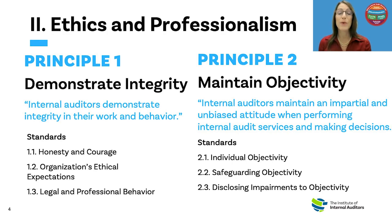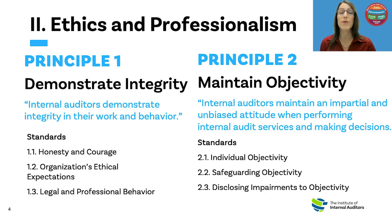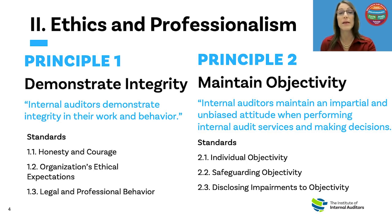Standard 2.1, individual objectivity, contains all the requirements about individual objectivity plus specific examples of potential biases, and a requirement for the CAE, chief audit executive, to support and promote objectivity by providing policies, procedures, and training. Standard 2.2, safeguarding objectivity, captures the requirements for recognizing and avoiding or mitigating the risk of impairments to objectivity. The considerations for implementation in standard 2.2 also includes a consideration about disclosing potential impairments that uniquely applies in the public sector.